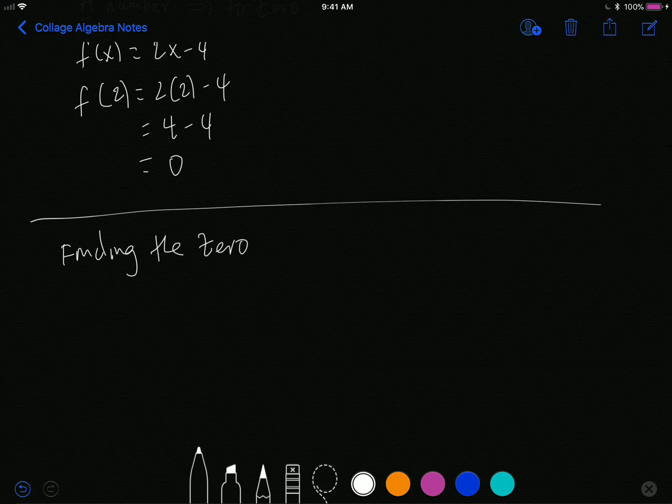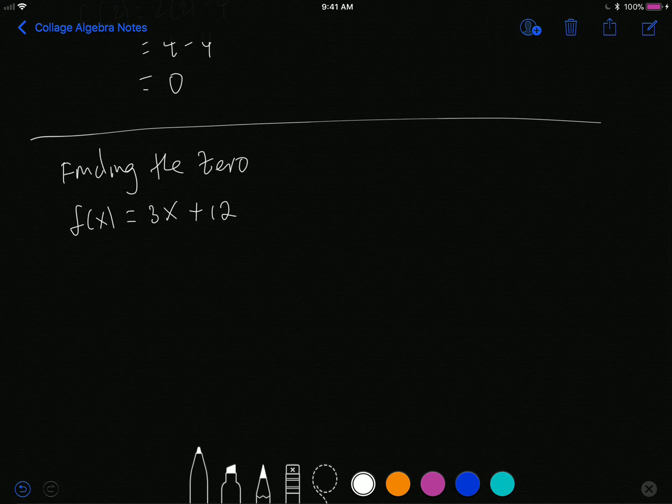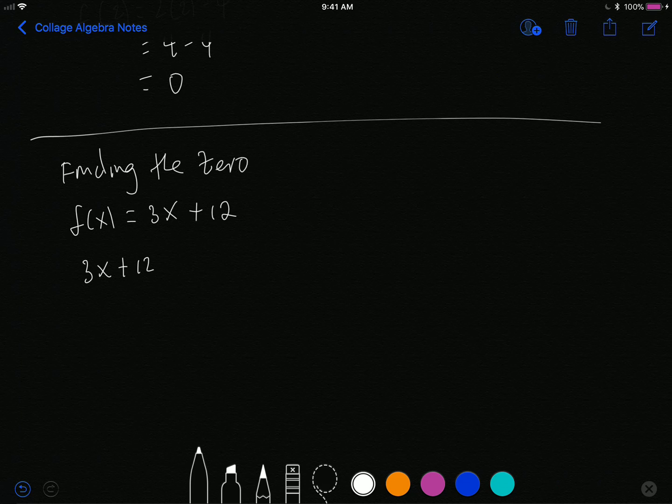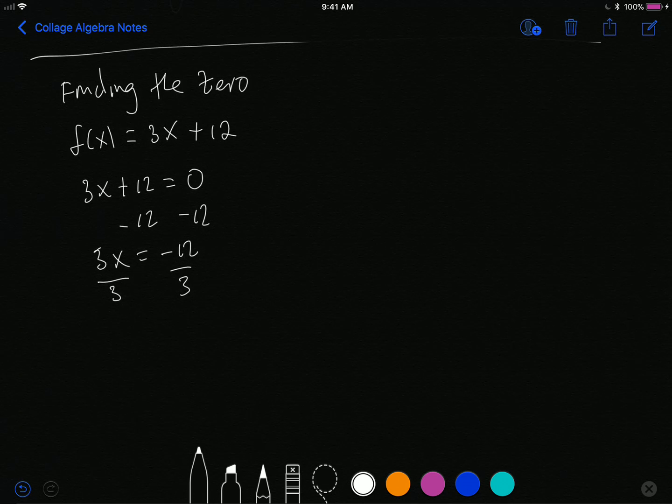For finding the zeros, some functions have more than one zero. Very simply, we use the fact that we know the answer will be zero. So if I have an example f(x) equals 3x plus 12, and I'm trying to find the zero, I simply say well when I plug in the number x I'm looking for, the answer is going to be zero. Then I simply solve this equation. So minus 12 minus 12, so 3x equals negative 12, divided by 3, and I get x equals negative 4.